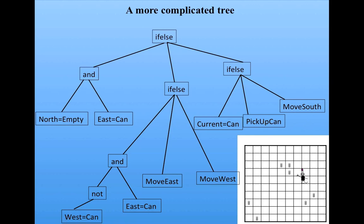Now he's in the situation where this first if clause fails — it's not true. There's not a can in his current site, so he has to move south. This is just a different way to express a strategy. It's hard to find a tree that is a good strategy, but that's going to be the job of the genetic algorithm — which will evolve these trees instead of strings.